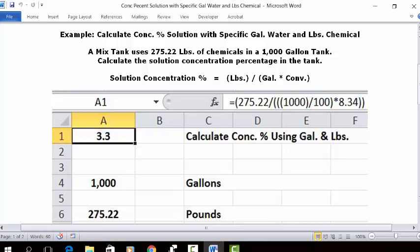In the formula bar, you can type in this formula: equal sign, open parentheses, 275.22, division key, open parentheses, 1,000, close parentheses, division key, 100, close parentheses, multiplication key, 8.34, close parentheses.